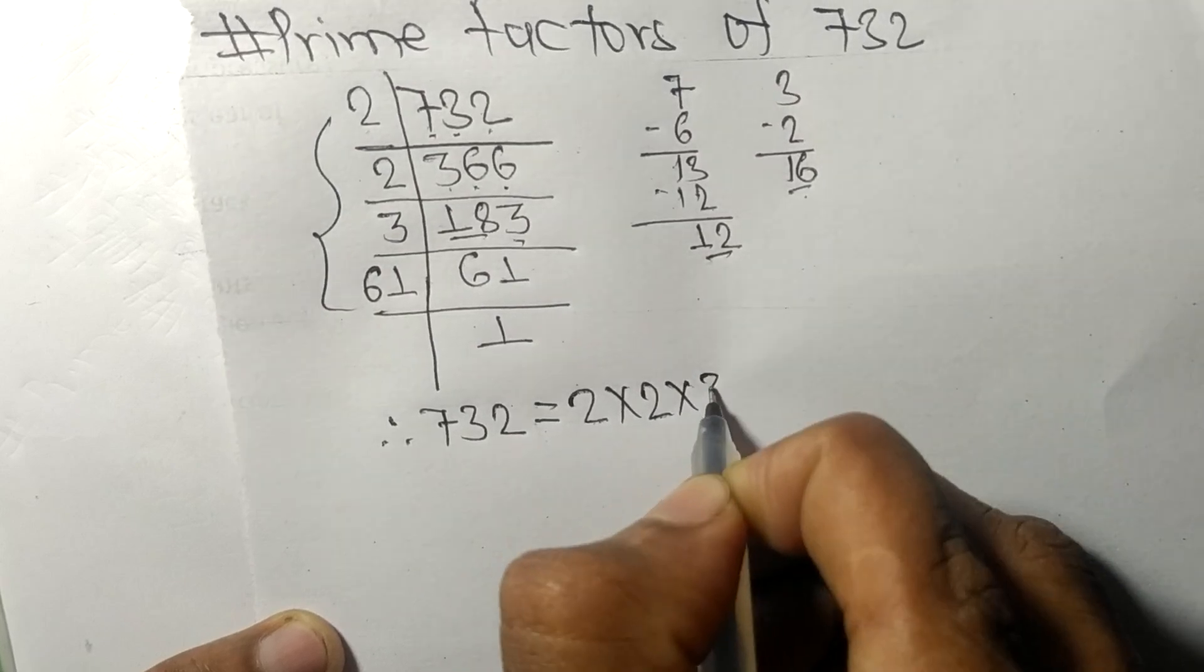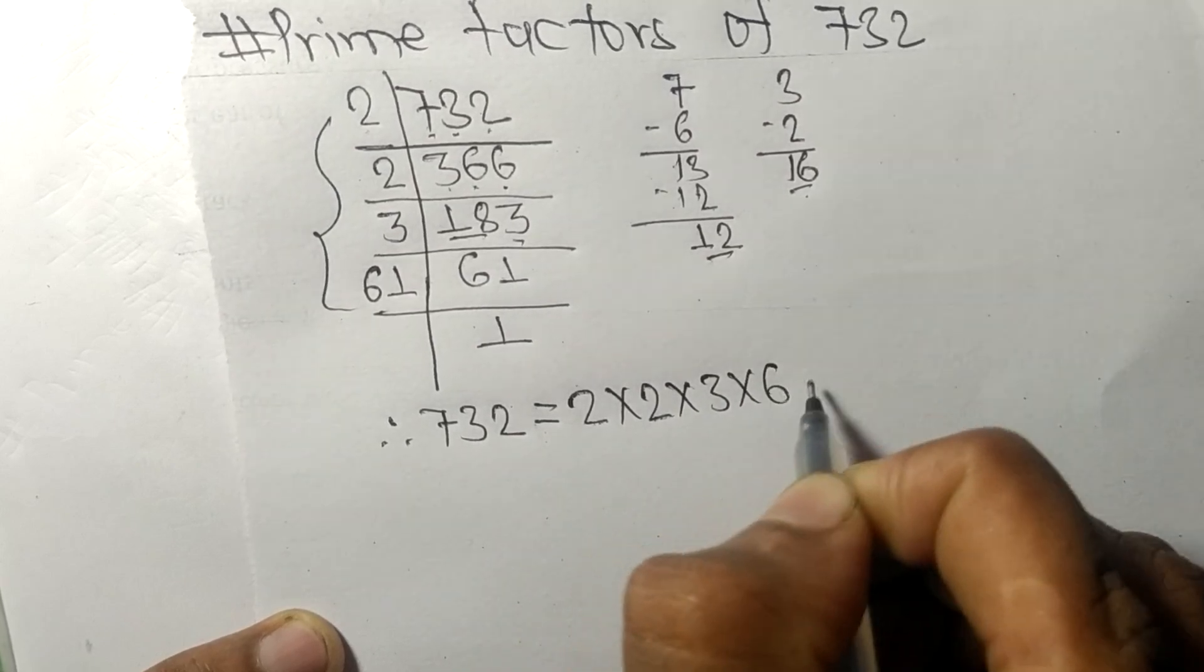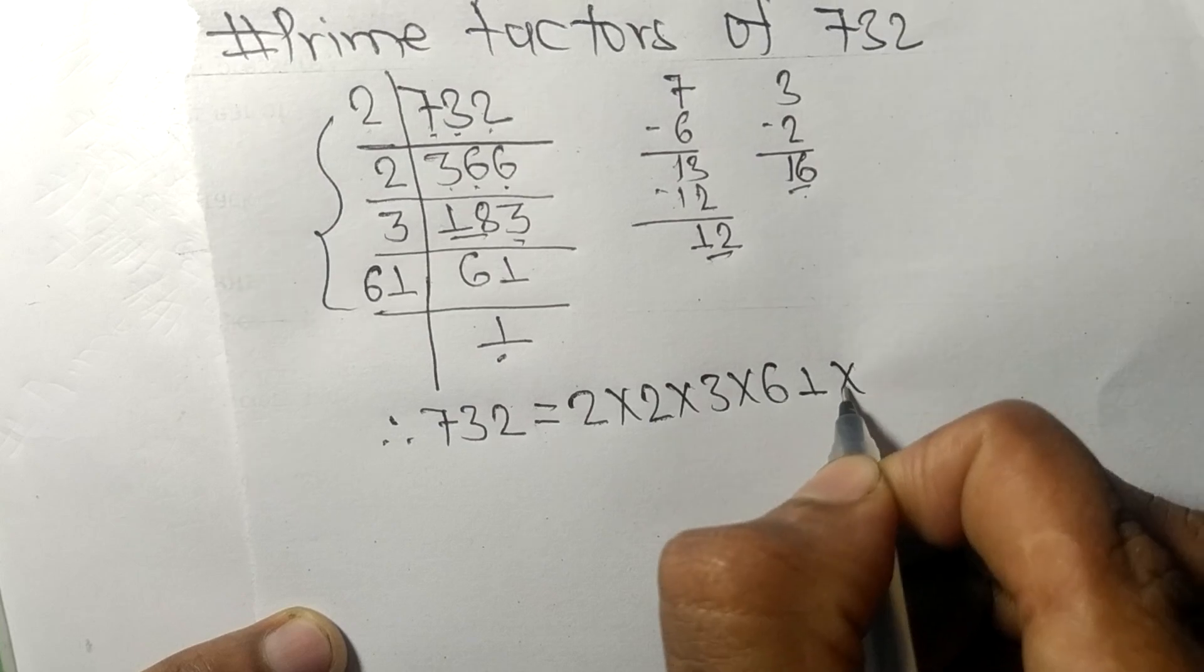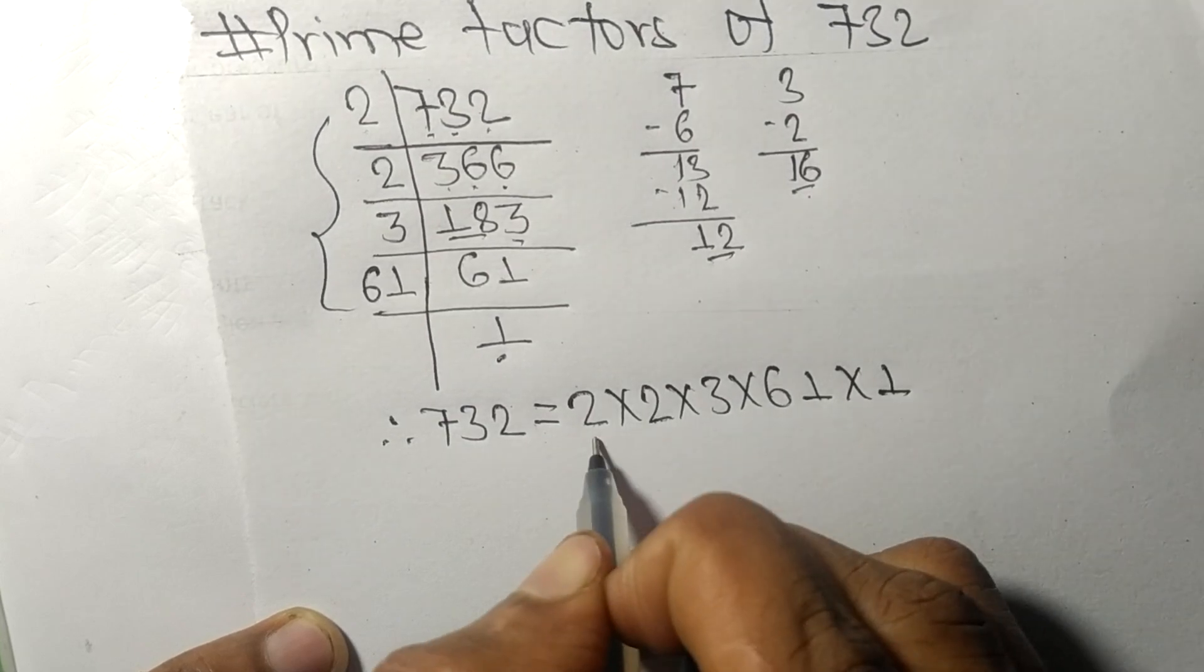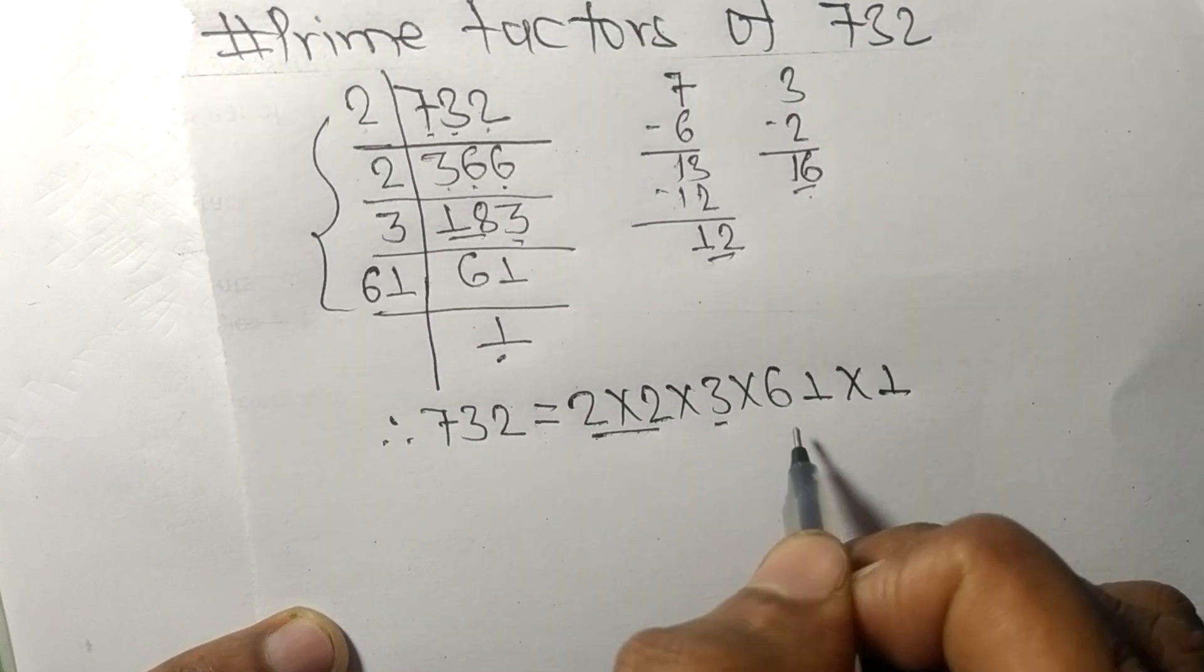And from here it is 1. So these 2, 3, 61, and 1 are the prime factors of 732.